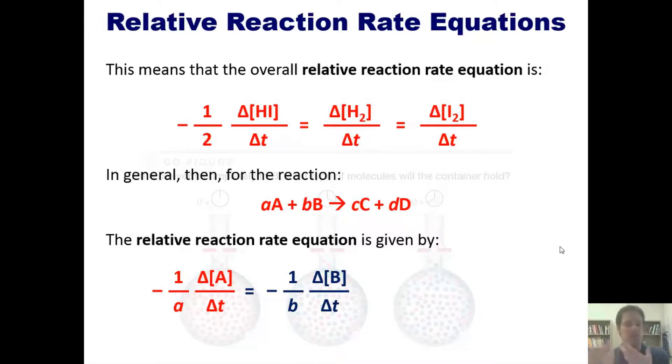which equals negative one over the coefficient B times delta concentration over delta t. These are the reactants which are disappearing over the course of this reaction, which is why they have a negative sign in front of them. But then for the products,